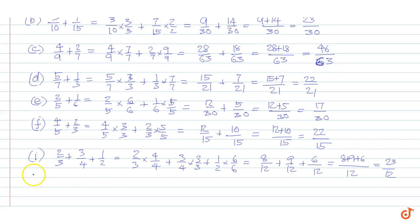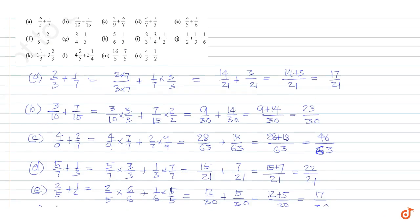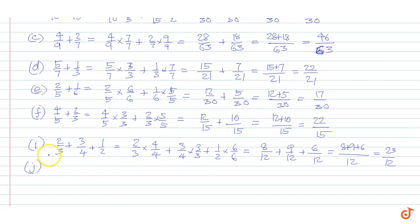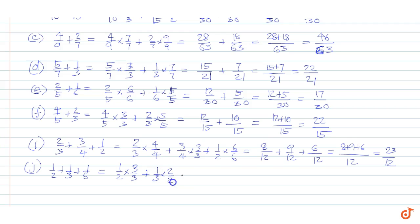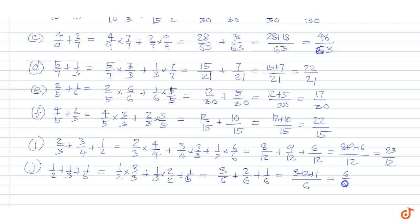Part j: 1/2 plus 1/3 plus 1/6. LCM is 6, so we get 1/2 into 3/3 plus 1/3 into 2/2 plus 1/6, equal to 3/6 plus 2/6 plus 1/6, which is equal to 3 plus 2 plus 1 by 6, equal to 6/6, equal to 1.